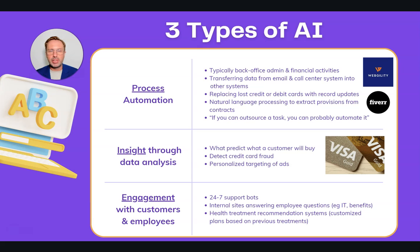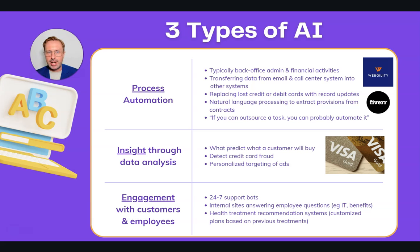You can use process automation for replacing lost credit and debit cards and updating systems with customer information. You can use natural language processing to extract provisions from contracts — maybe something buried in the fine print — and AI can detect that. As a general rule: if you can outsource a task, you can probably automate it. I outsource tasks to Fiverr for things like graphic editing and basic copywriting, which indicates AI could enhance or even replace those activities.